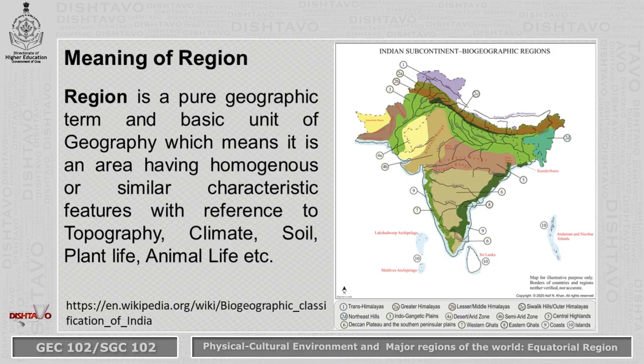Before we understand about the equatorial region, first let us try to understand what is a region. A region is a pure geographic term and is a basic unit of geography, which means it is an area having homogeneous or similar characteristic features such as topography, climate, soil, plant life, animal life, geology, etc.